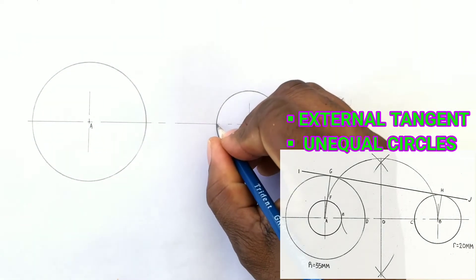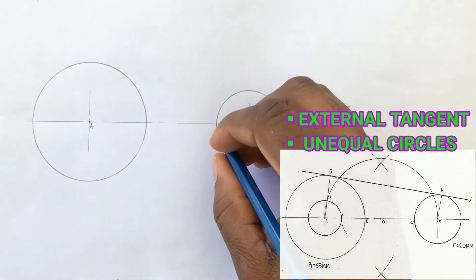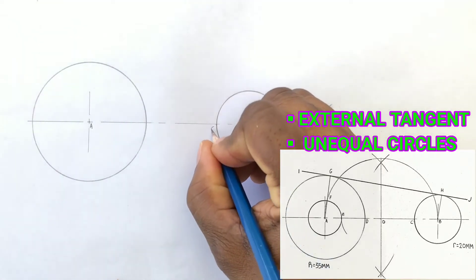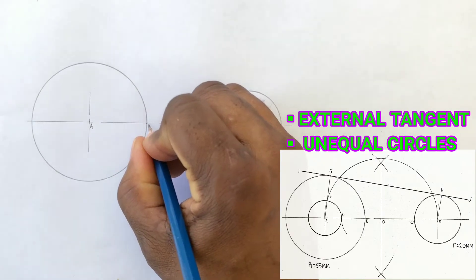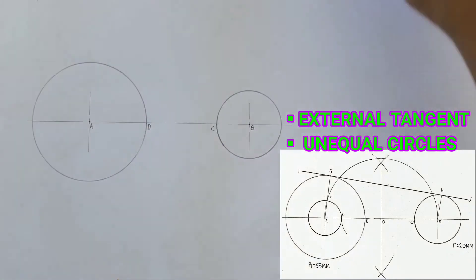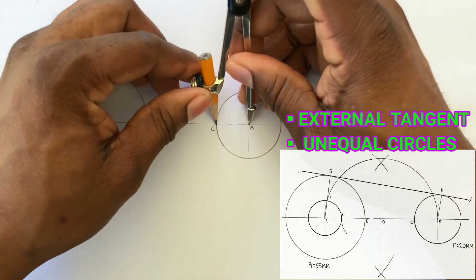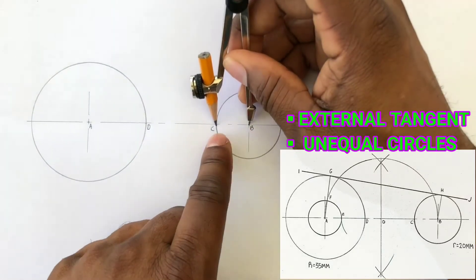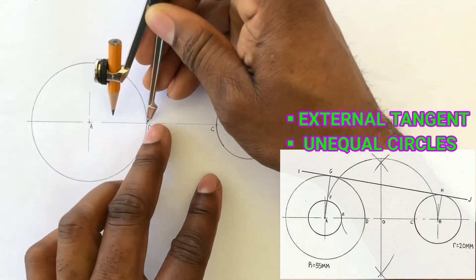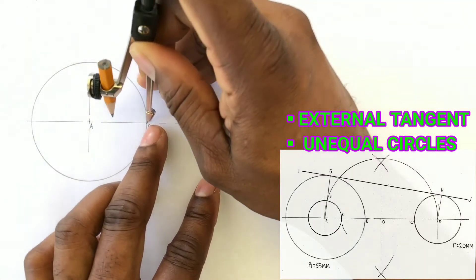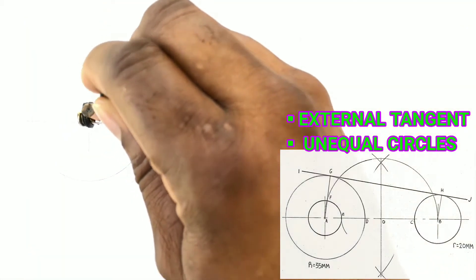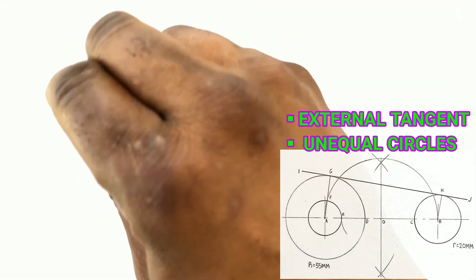We will now label point C and point D. Now open your compass to a radius of BC and from point D we will scribe an arc to the line to give us point E.